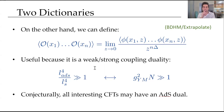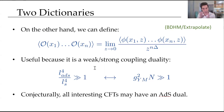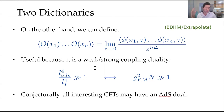Conjecturally, all interesting CFTs have an ADS dual, but of course it's not known in general. There are some properties a CFT needs to satisfy to be describable in terms of a gravity dual: it has to have large central charge, lots of degrees of freedom, a small number of operators of low conformal dimension, and so on. There's no general proof that every interesting CFT can be built from some bulk gravity theory. N=4 super Yang-Mills and type IIB supergravity is cited because that is one of the best studied examples with an explicit realization of the duality, but there are others.